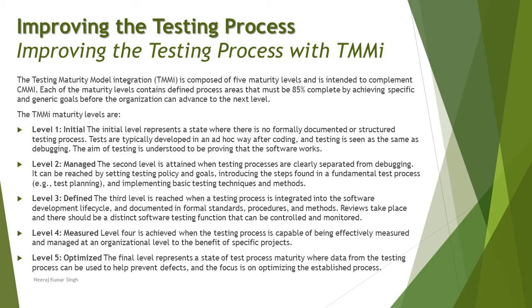Level four is achieved by an organization when the testing process is capable of being effectively measured and managed at an organizational level to the benefit of specific projects. At this level you are not only performing activities like static or dynamic, functional or non-functional, white box or black box testing — you also have a set of metrics and KPIs (key performance indicators) that evaluate the effectiveness of your activities. For example, you can capture the number of defects identified in unit testing and compare them at the integration level to see how well each level is responding. When your process is measurable and monitorable in terms of outcomes and efficiency, that is what is called the Measured level.